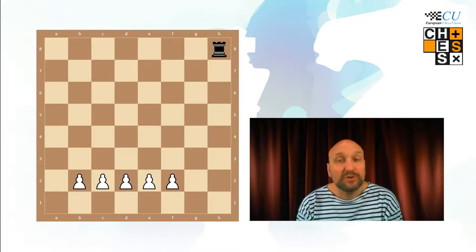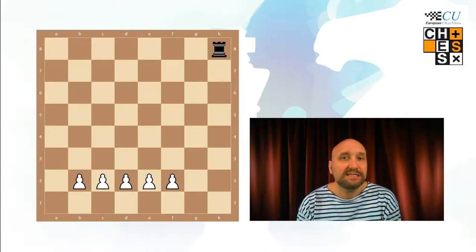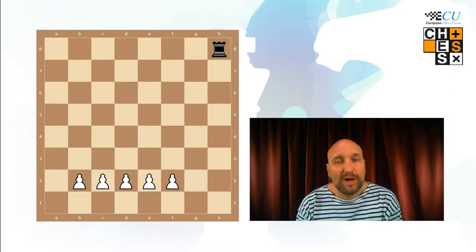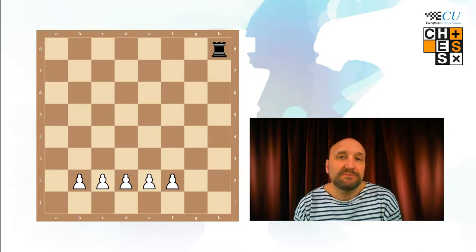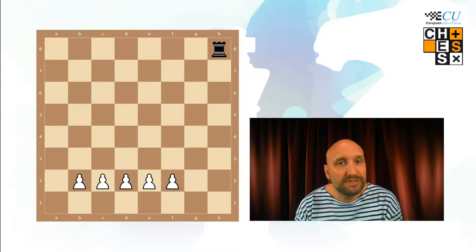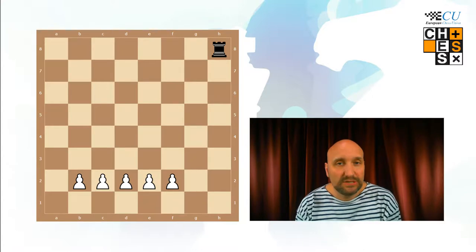White starts the game. According to the value system of chess, each pawn is worth one point and that means white has got five points on the board. According to the value system, a black rook is worth five points so we have armies of equal strength.